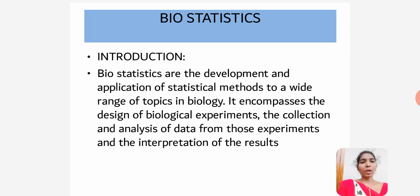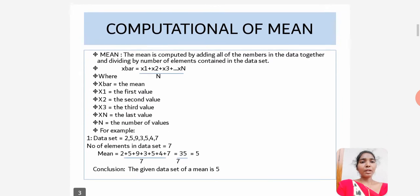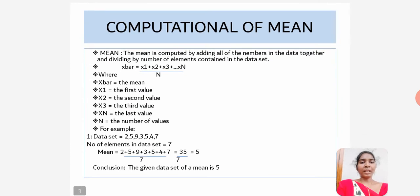We will discuss three topics: mean, mode, and median. First of all, I would like to discuss about mean. The mean is computed by adding all of the numbers in the data together and dividing by the number of elements in the given dataset.